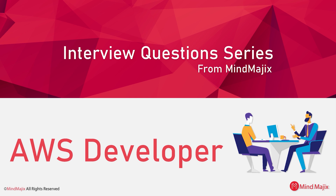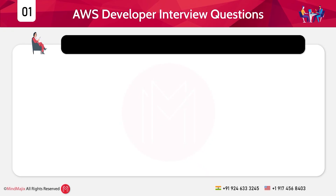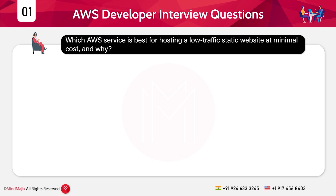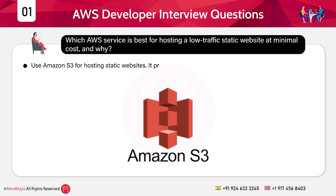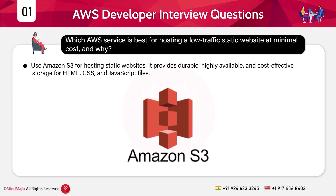Let's get started with the interview questions and answers, starting with the beginner level, first category: scenario-based questions. Question 1: Which AWS service is best for hosting a low-traffic static website at minimal cost, and why? Answer: We can use Amazon S3 for hosting static websites because it provides durable, highly available, and cost-effective storage for HTML, CSS, and JavaScript files. Amazon S3 also supports static website hosting configurations and custom domain integration.